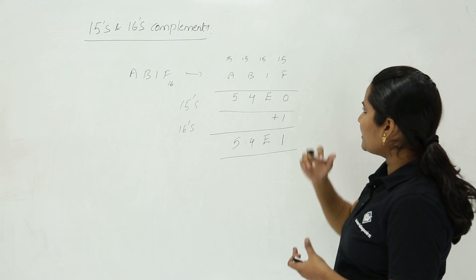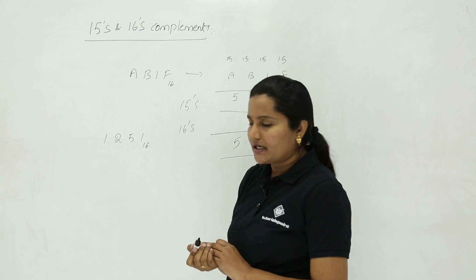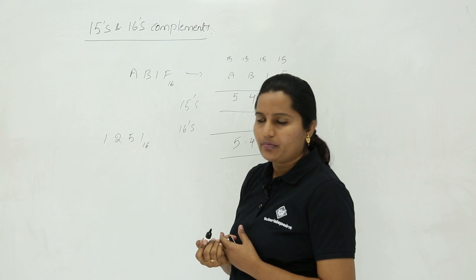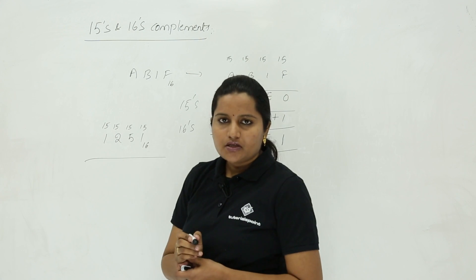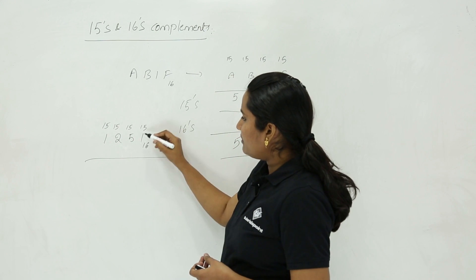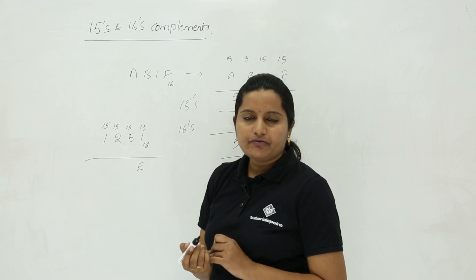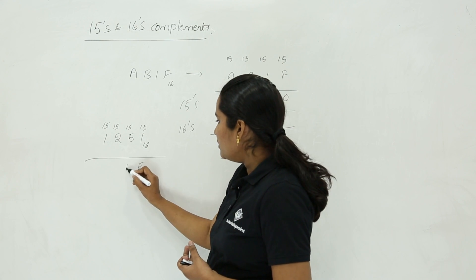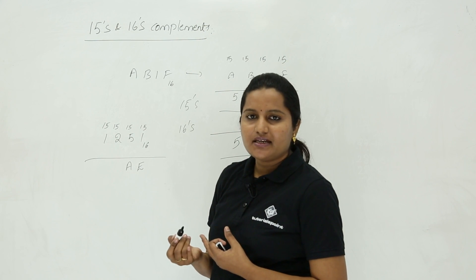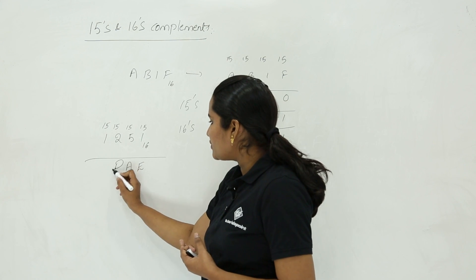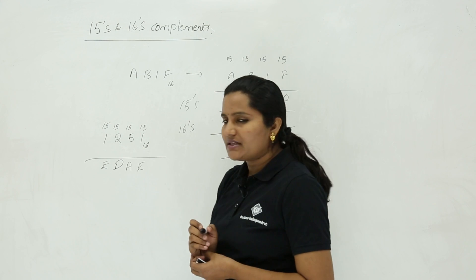Let us take another example. Here the hexadecimal number given is 1251. I need to find out the 15's and 16's complement. To find the 15's complement, I am subtracting each and every digit from 15. So 15 minus 1 is 14, which is equivalent to E. Next, 15 minus 5 is 10, and 10 is equivalent to A. And 15 minus 2 is 13, and 13 is equivalent to D. Next, 15 minus 1 is 14, which means E. So the resultant 15's complement hexadecimal number is EDAE.